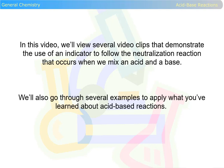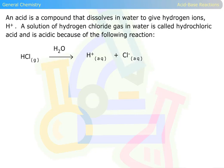We'll also go through several examples to apply what you've learned about acid-base reactions. An acid is a compound that dissolves in water to give hydrogen ions H+. A solution of hydrogen chloride gas in water is called hydrochloric acid and is acidic because of the following reaction.